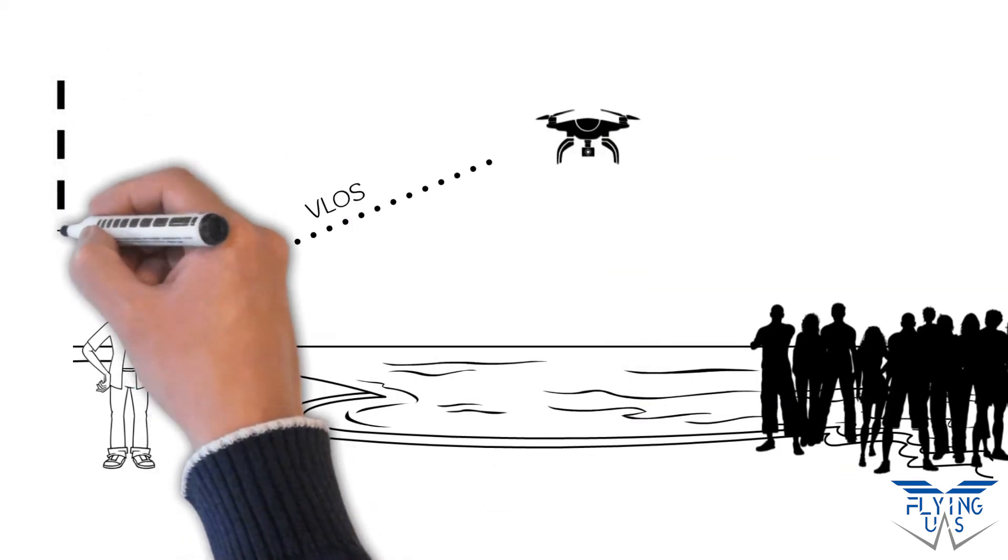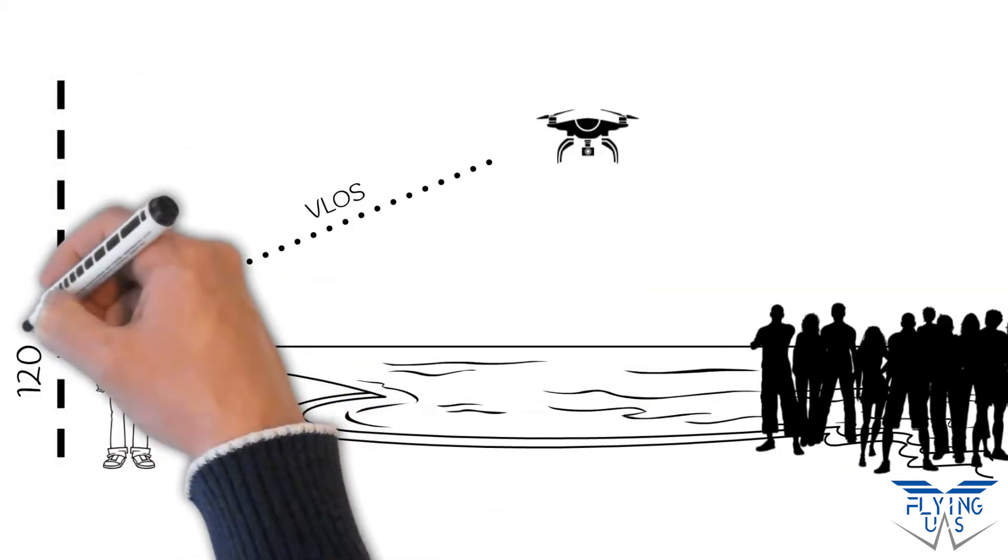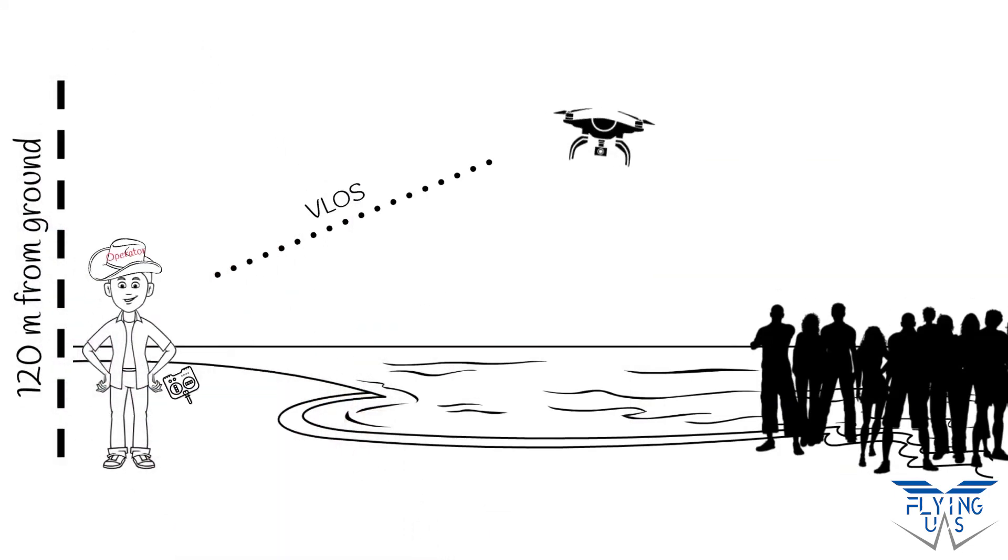Not fly more than 120 meters height. No overflying assemblies of people. Once you comply with these rules, you don't need any approval from the competent authority before the flight.